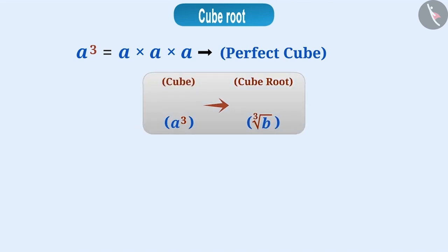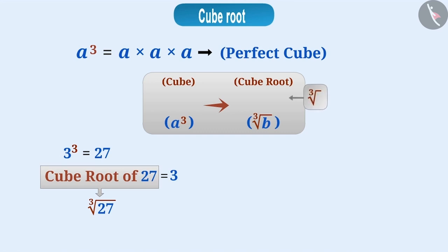You must remember that 3 cube is equal to 27. We can say that the cube root of 27 is 3 and this is how we represent it. Keep in mind that this sign symbolizes cube root. Similarly, if we say that 4 cube is equal to 64, in a different way we can say that the cube root of 64 is 4.